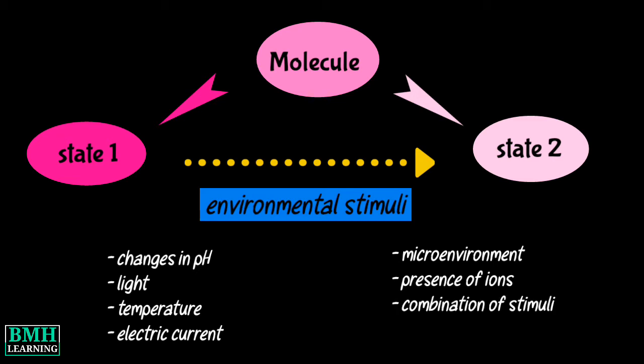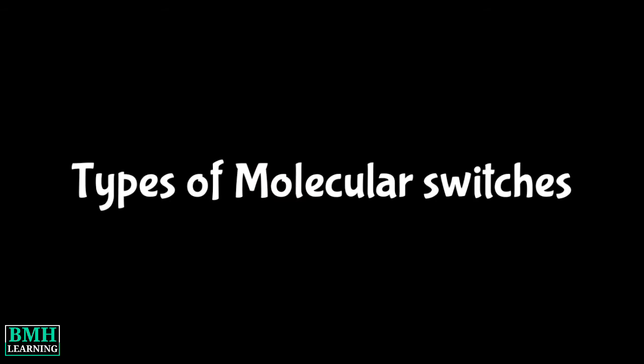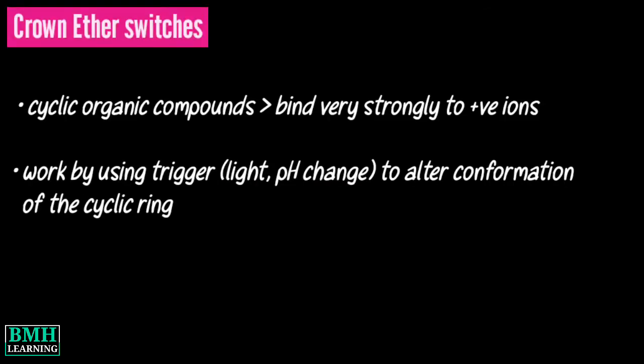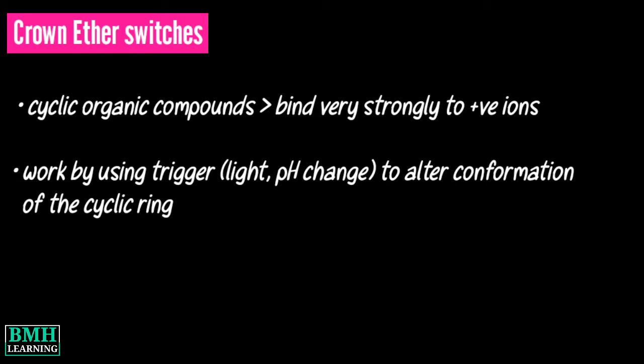Types of molecular switches: Crown ether switches. Crown ethers are cyclic organic compounds which can bind very strongly to positive ions. Most crown ether switches work by using a trigger such as light or a pH change to alter the conformation of the cyclic ring.